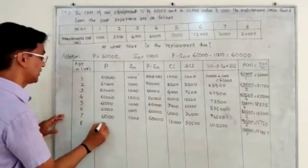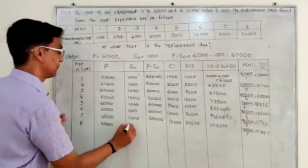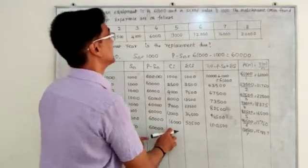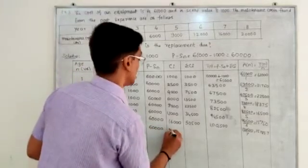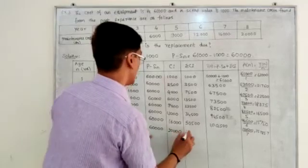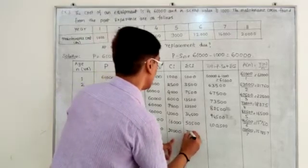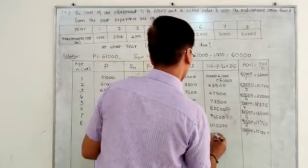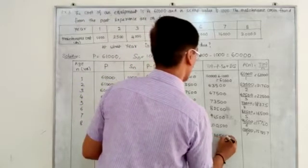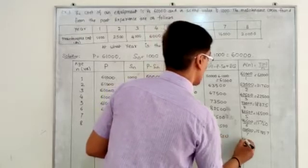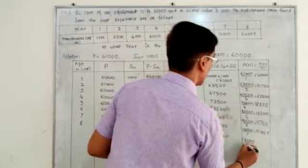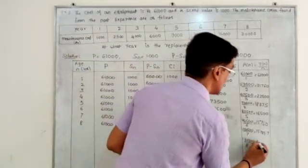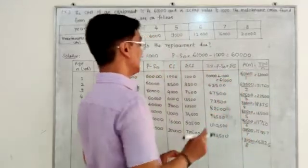For the eighth year: P is 61,000, P minus S_N is 60,000. C_I is 20,000, so cumulative C_I is 20,000 plus 50,500 equals 70,500. Then 60,000 plus 70,500 is 1,30,500. So 1,30,500 divided by 8 equals 16,312.5.